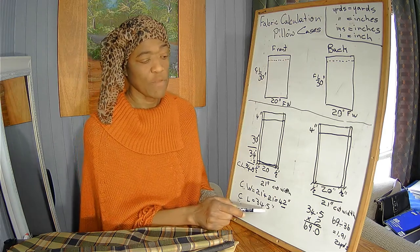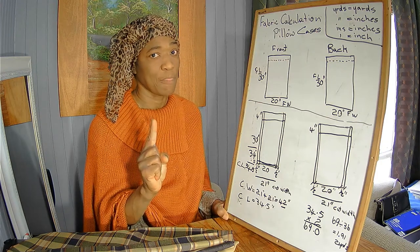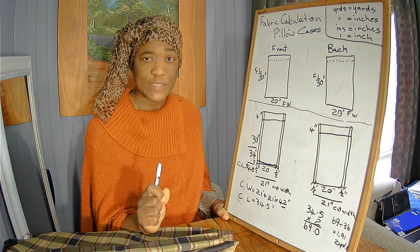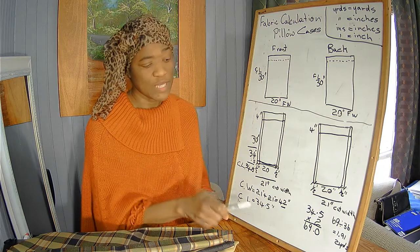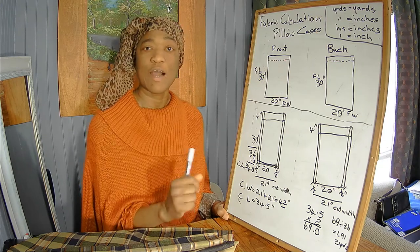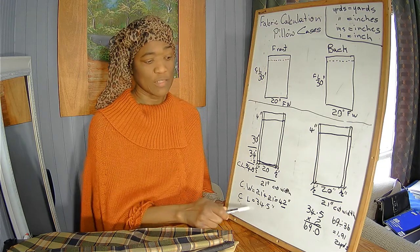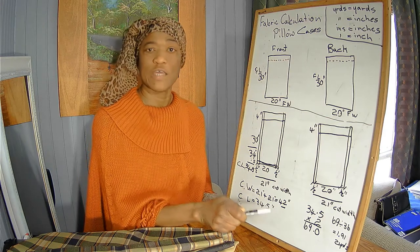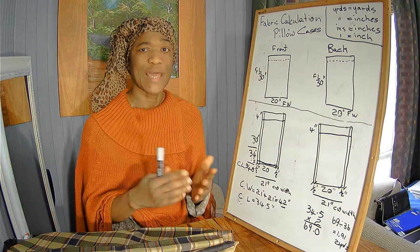Our cut length is 34.5 inches for one pillowcase. There are 36 inches in a yard of fabric, which means that one yard of fabric covers one pillowcase because our cut length is 34.5 inches.